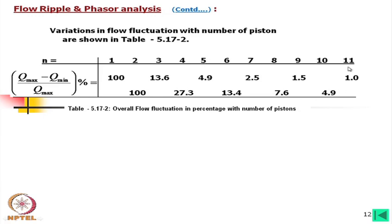For eleven pistons, fluctuation is about 1%, and for thirteen pistons it is less than 0.5% — effectively negligible. This means thirteen pistons would give virtually no fluctuation, making it theoretically ideal for smooth flow, though the cost increases significantly with more pistons.